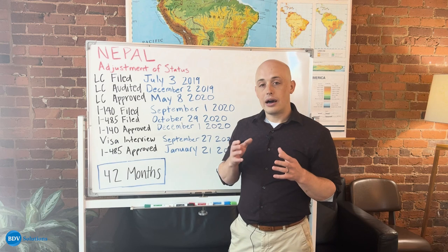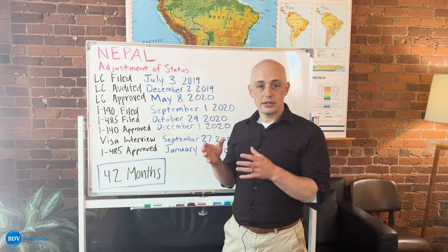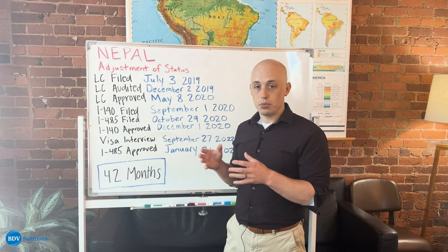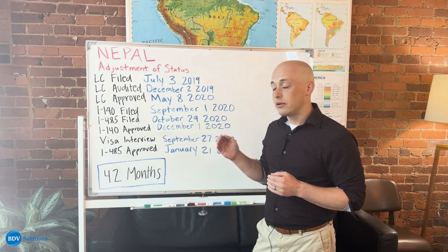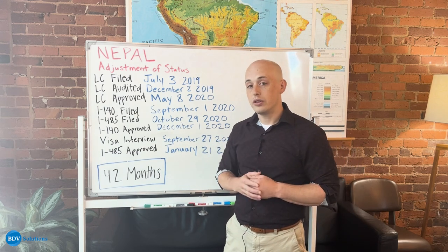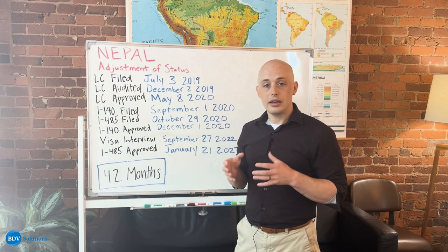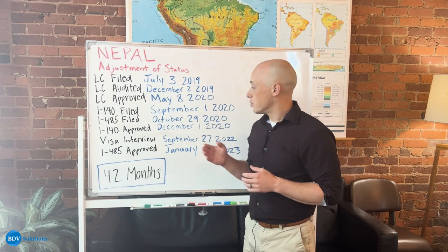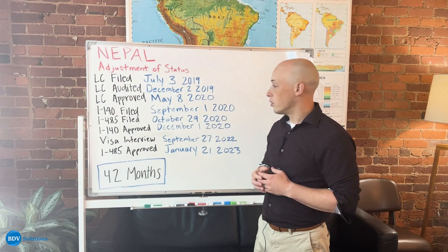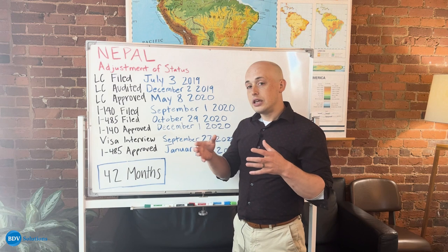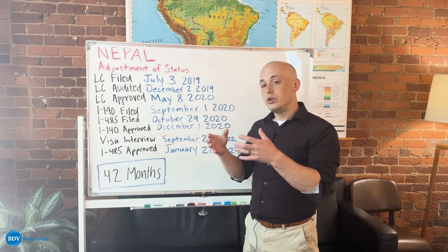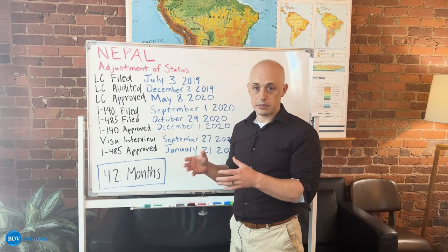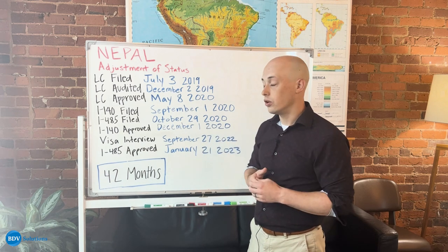At that time, you will be onboarded with attorneys that work together with BDV to go into the next stage of your process. It begins by filing an I-140 with USCIS, which is the immigration branch of the United States government. This person's I-140 was filed in December of 2020, and it is the employer's opportunity to show immigration that they have followed all the appropriate steps to be able to sponsor you for their green card.